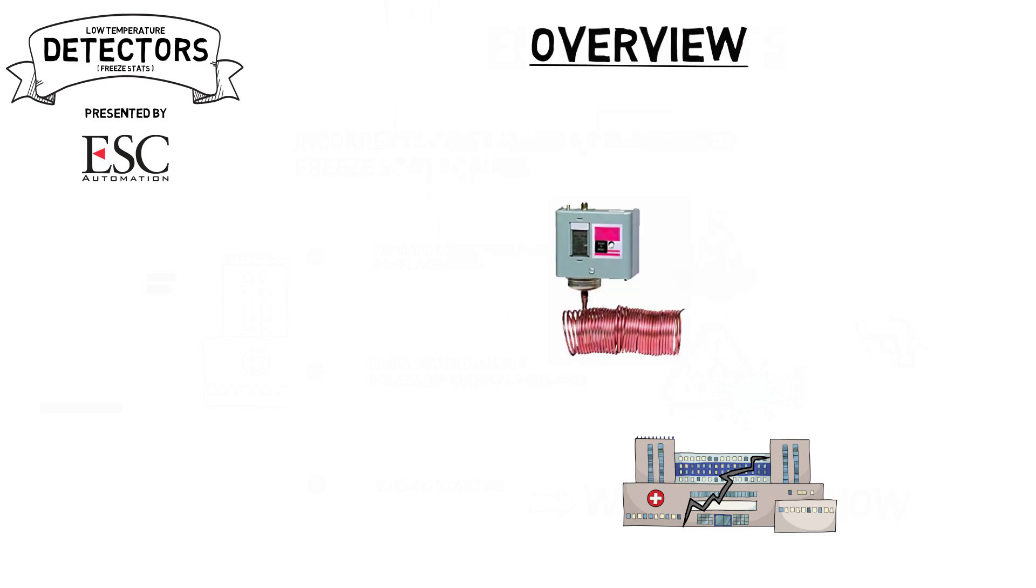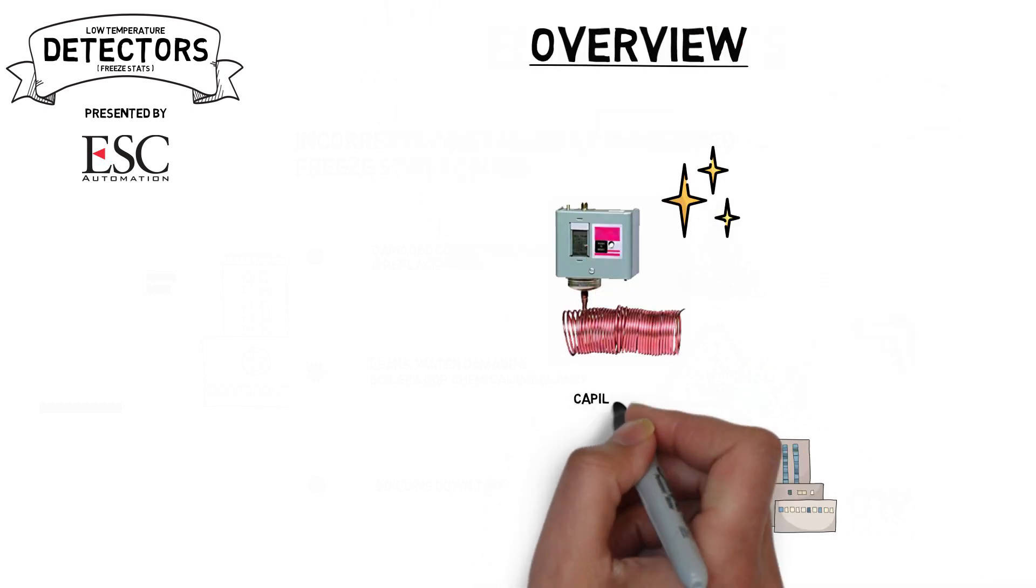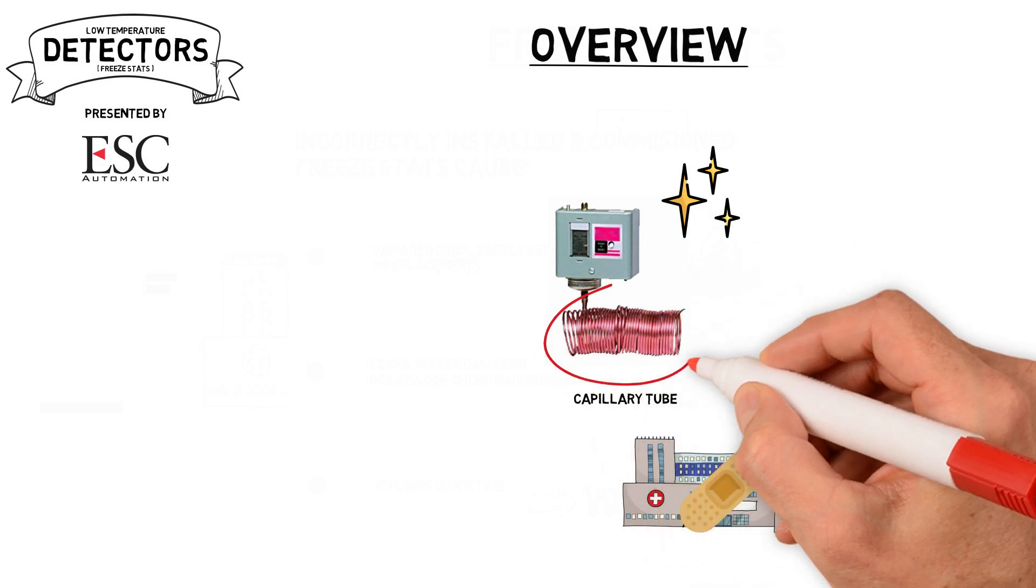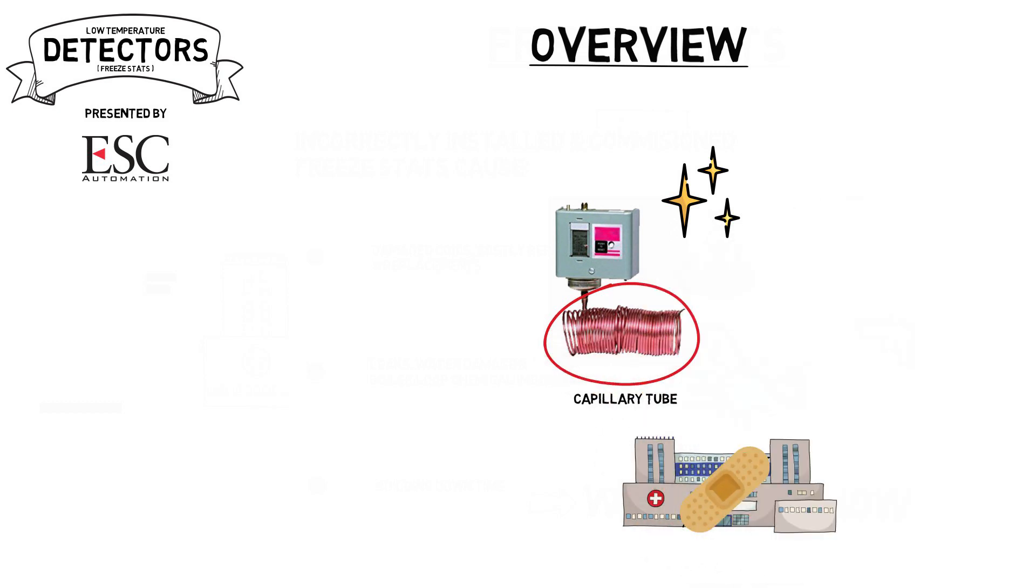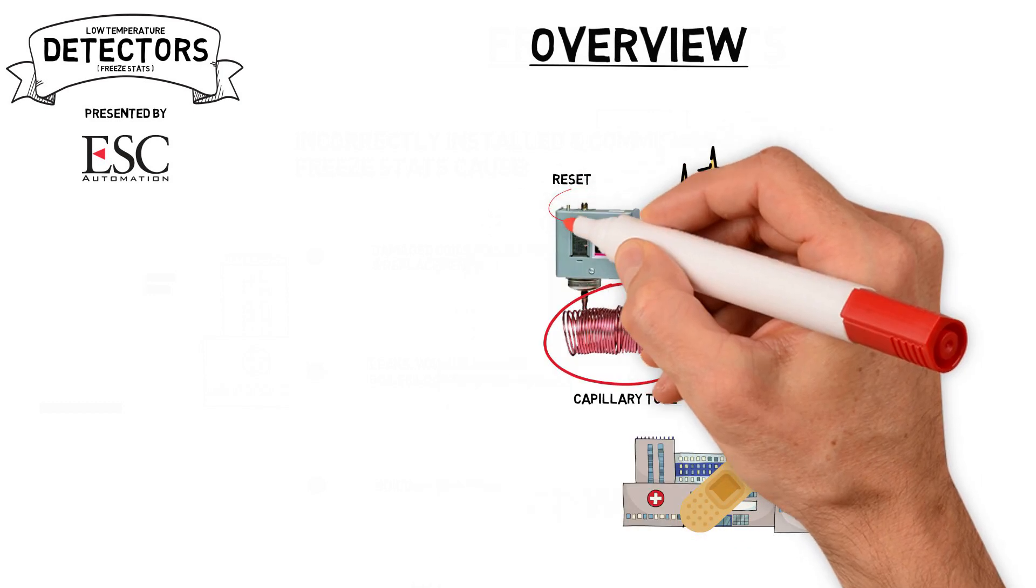The temperature sensing element on the stat is called the capillary tube. It is attached to a diaphragm that when tripped deactivates an electrical relay. The stat also contains a reset switch and a set point adjustment slide.